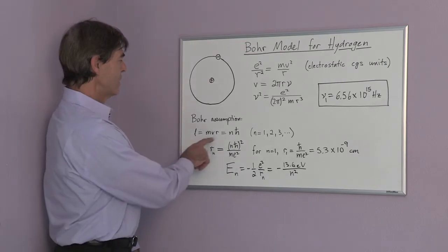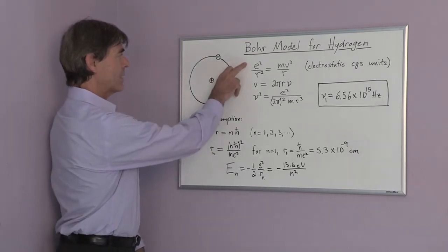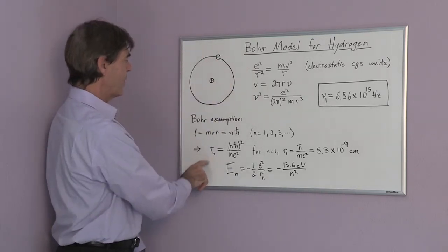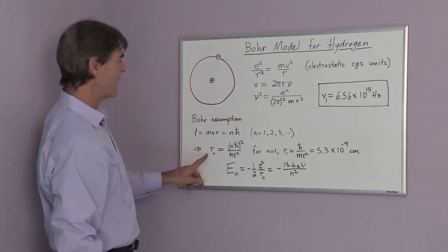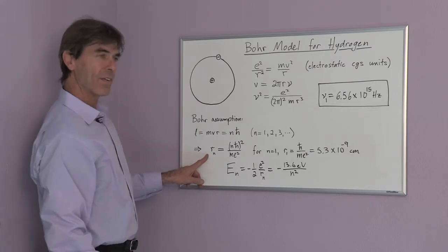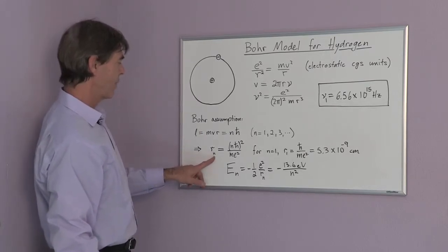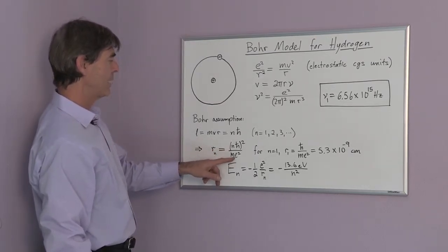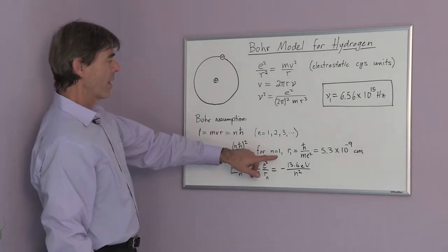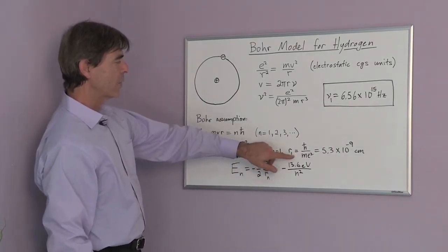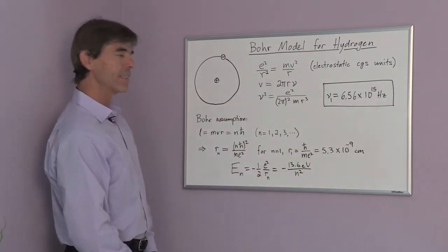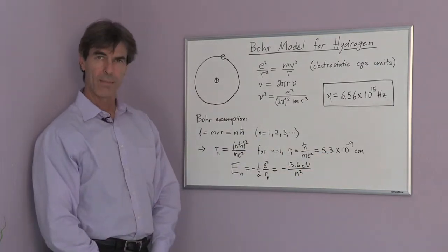And using this assumption, and substituting it into the top equation, we have the relation that the radius of an orbit for n equals 1, 2, 3, 4, is equal to n h bar squared divided by m e squared. And for n equals 1, that radius is equal to 5.3 times 10 to the minus 9 centimeters. And this is called the Bohr radius of hydrogen.